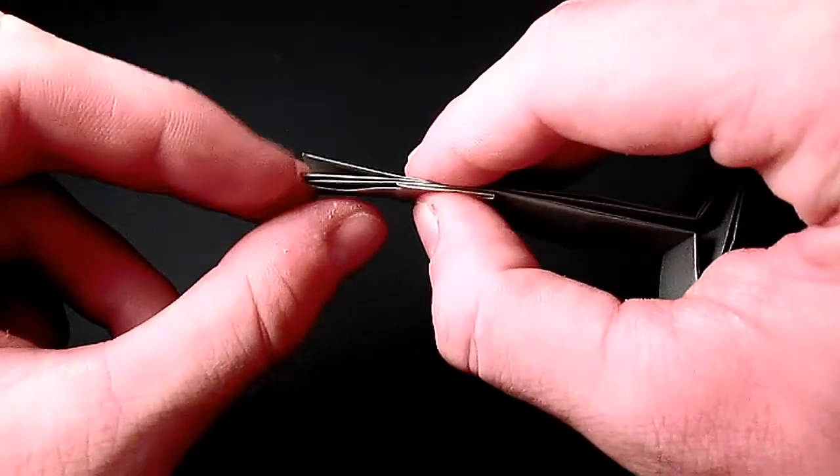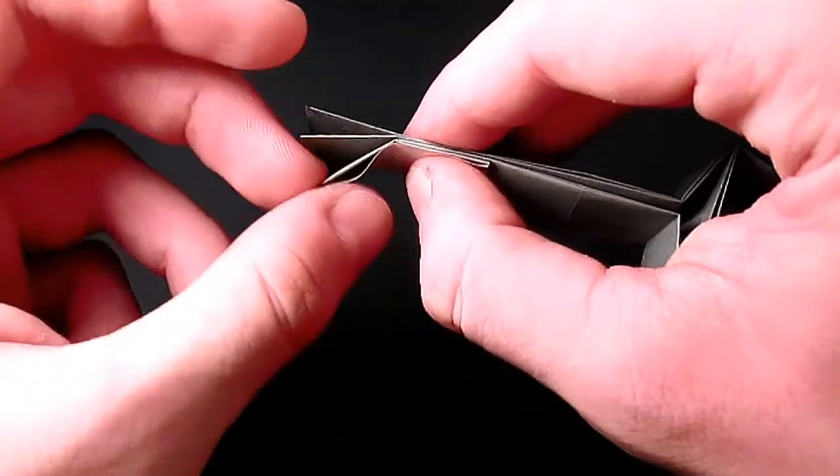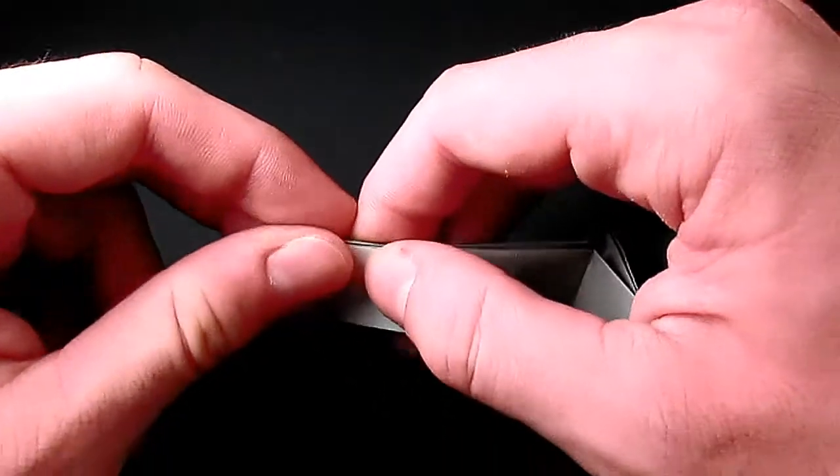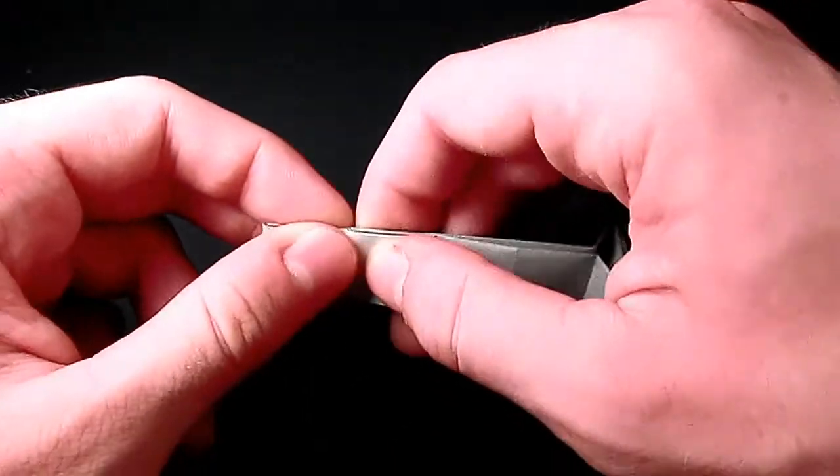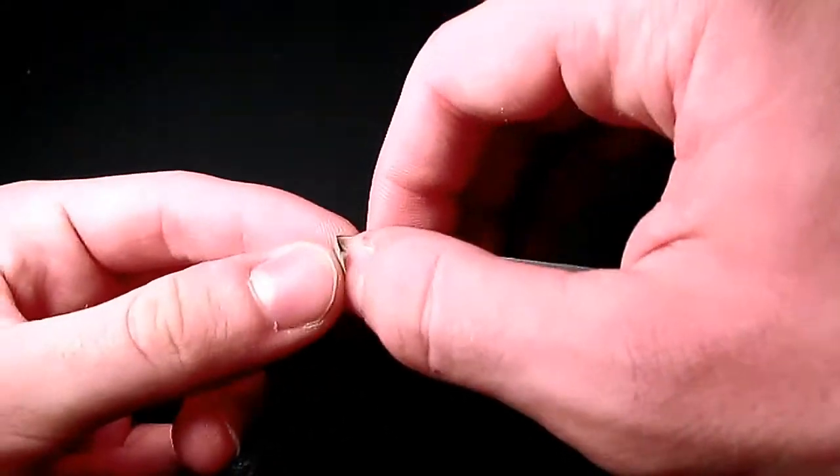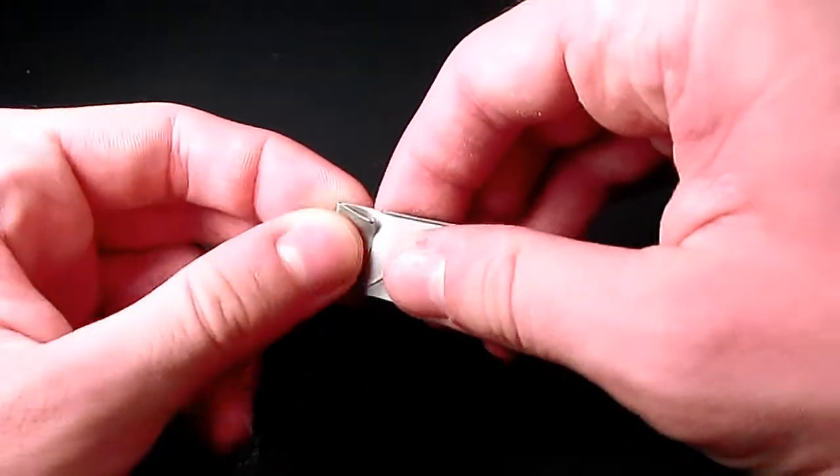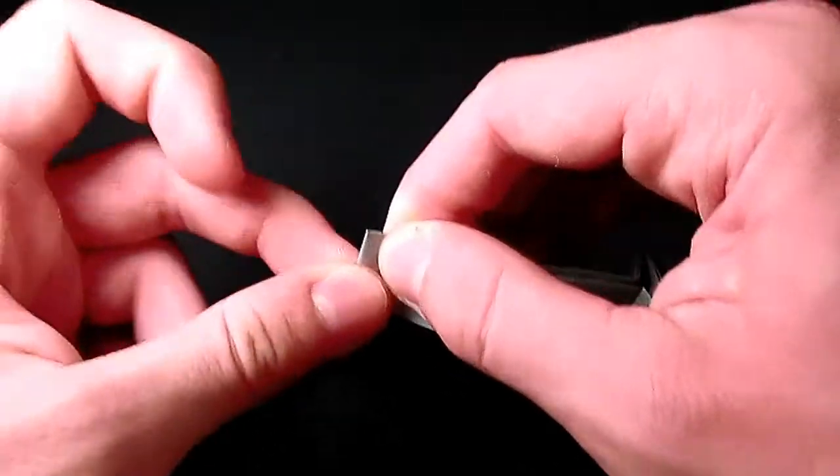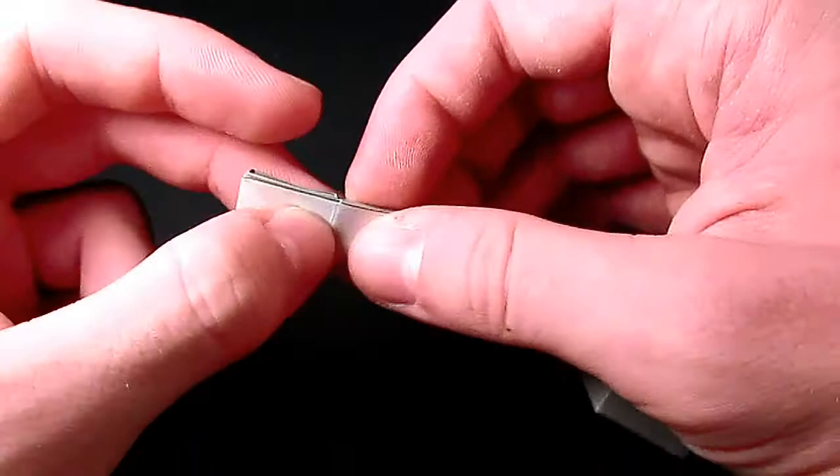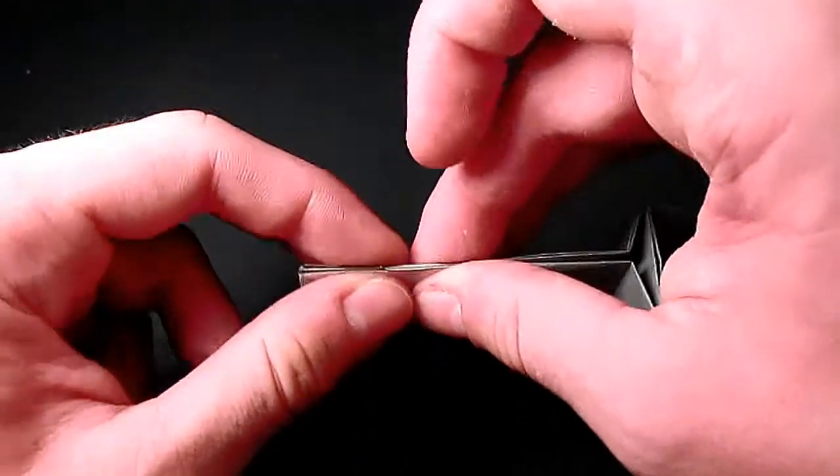And then we're going to grab two flaps now. One, two. Fold them over. Squashing that up on a crease we already made. And now what we're going to do is just take this flap here and fold it over, just to shorten our key for aesthetic reasons. If you're into all that artistic stuff.